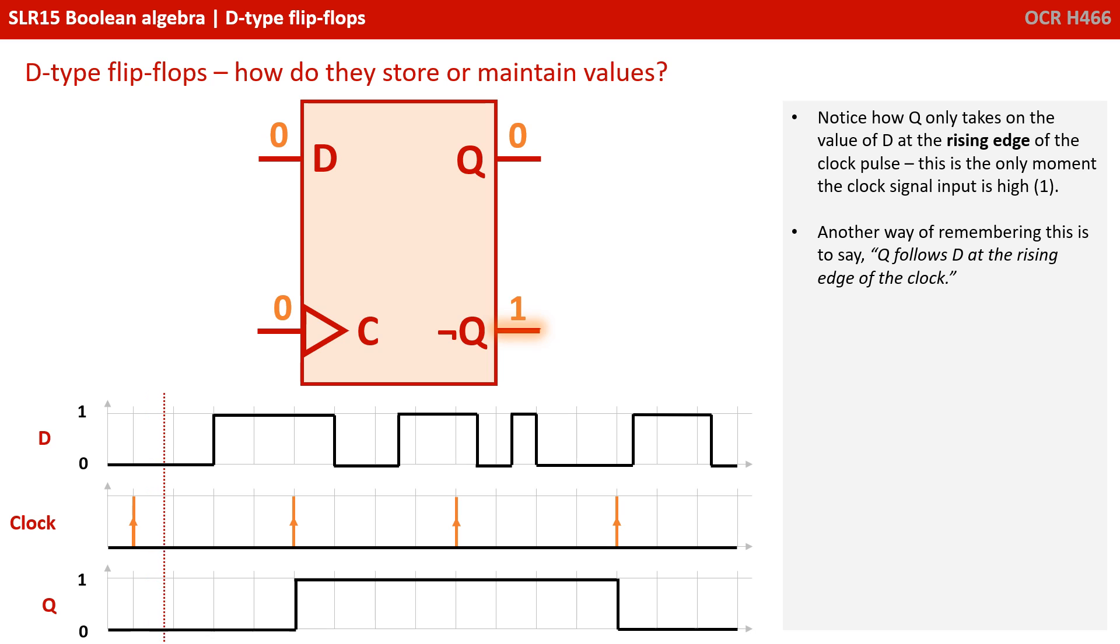Notice how Q only takes on the value of D at the rising edge of the clock pulse. This is the only moment the clock signal input is high or 1. Another way of remembering this is to say that Q follows D at the rising edge of the clock.